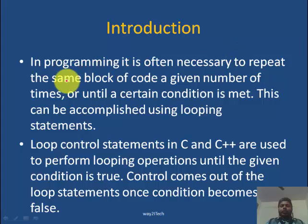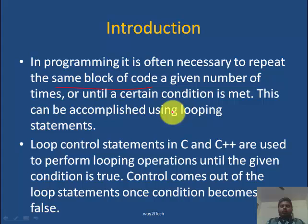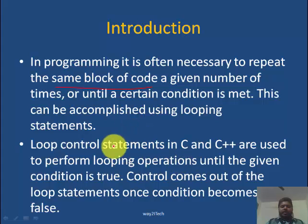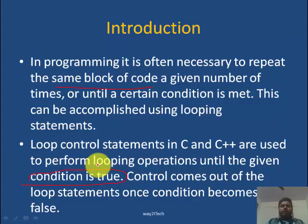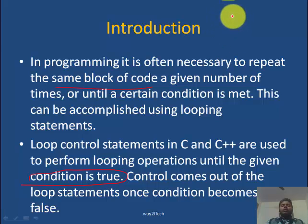Whenever we need to execute the same block of code again and again, we will use loops. Loop control statements in C and C++ are used to perform looping operations until the given condition is met. There will be one termination condition which will tell us when the loop will terminate. Control comes out of the loop statement once the condition becomes false — till the condition is true we execute the block, and when it becomes false, we stop.